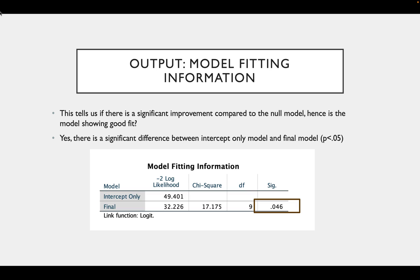The next box is the Model Fitting Information, which tells you if there's a significant improvement compared to the null model. Here we can see there is a significant difference compared to the intercept only model, which is our null model and our final model.